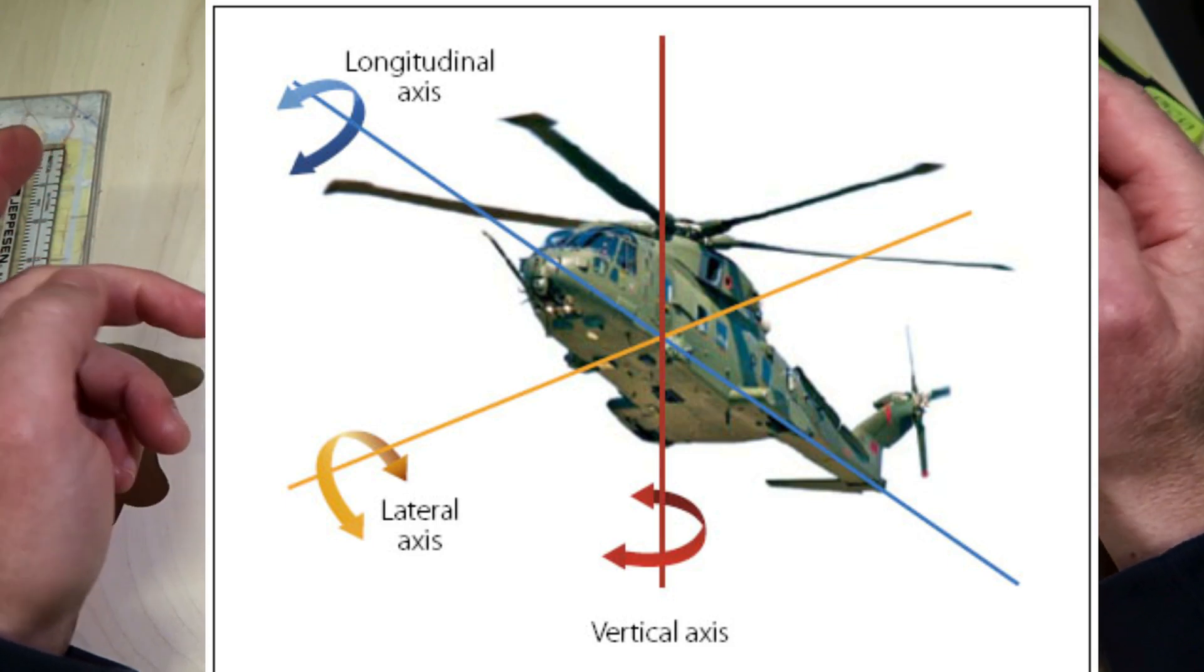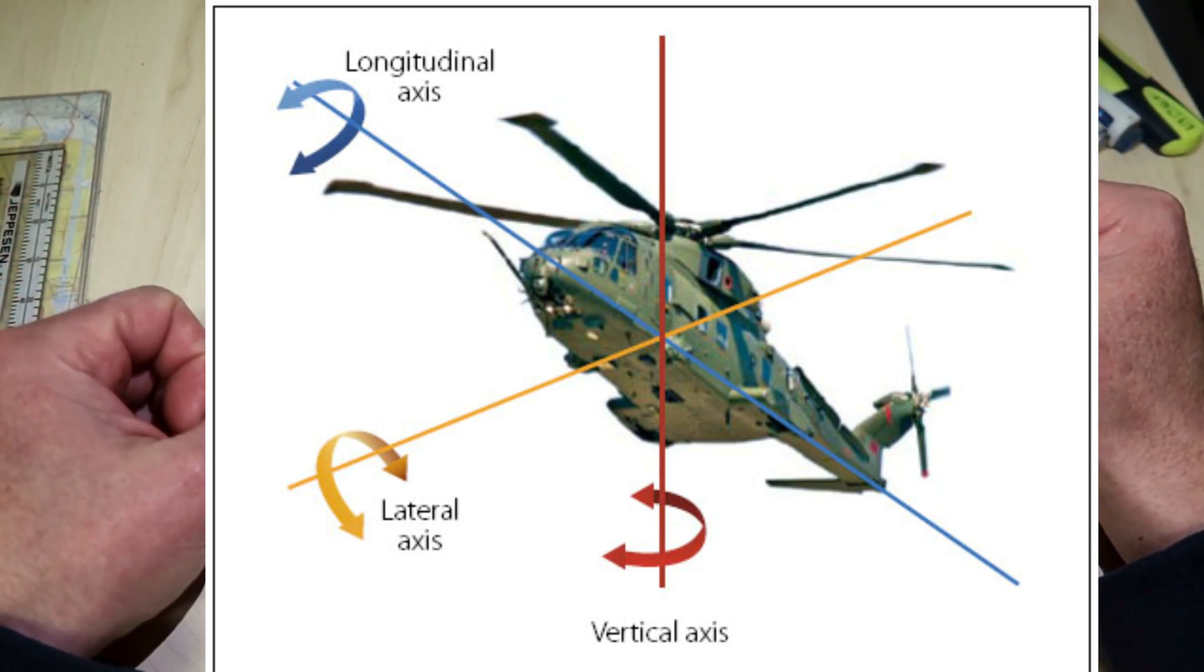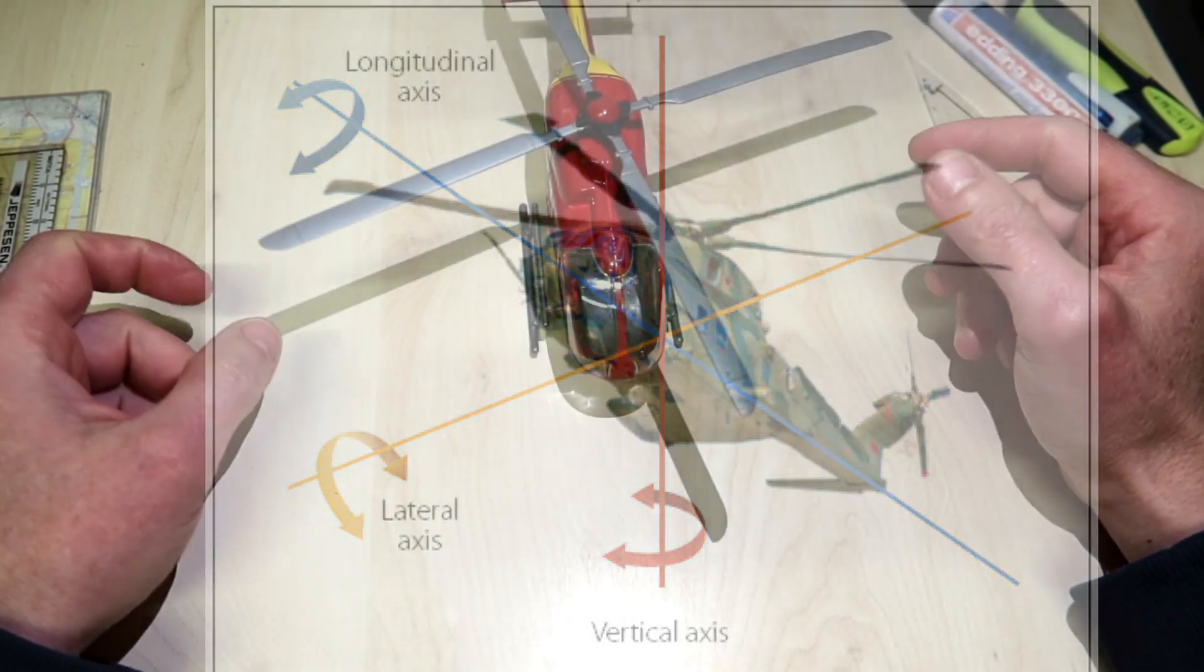The axis which runs vertically through the helicopter is known as the vertical or normal axis.